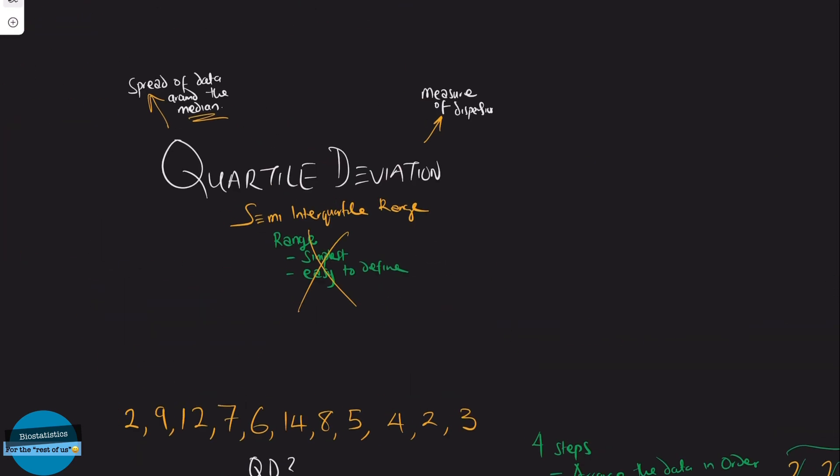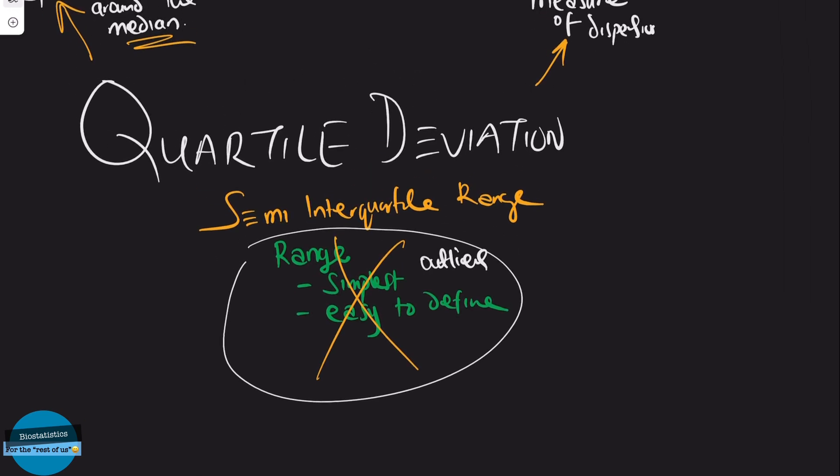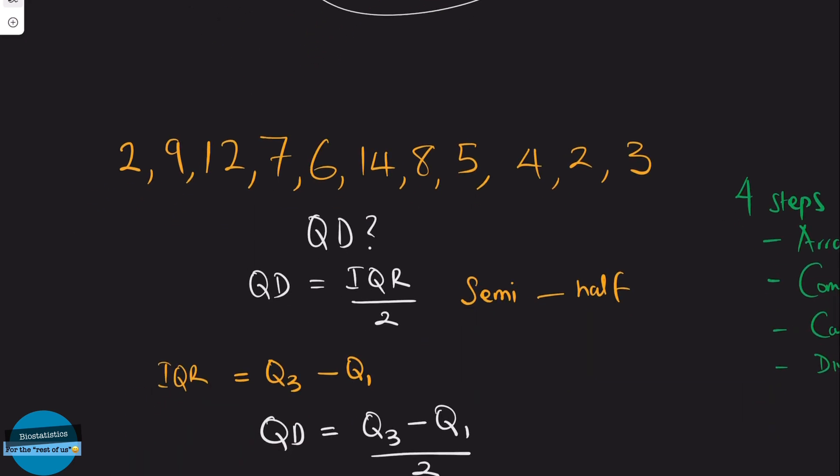So remember, I started by saying the range is not a good measure of dispersion because it's affected by outliers. And the answer to the issue of outliers can be solved by computing the interquartile range, which is the difference between the third quartile and the first quartile.